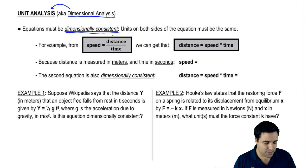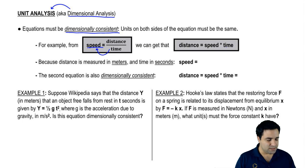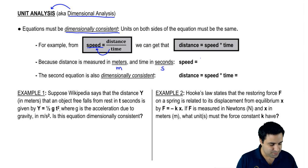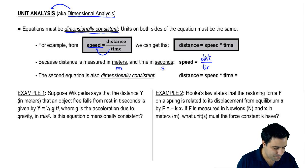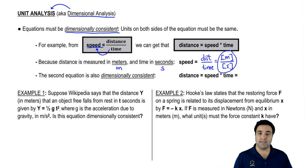Here's a quick example. Speed is distance over time. So if you move time to the left, you get that distance is speed times time. Because distance is measured in meters and time is measured in seconds, speed — which is distance over time — has to be measured in meters per second.